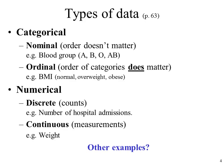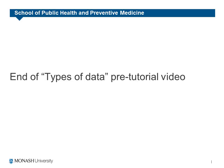Hopefully after seeing the data dictionary slide, the types of data and the distinction between nominal and ordinal categorical data makes more sense. Now have a think of other examples — other variables that you can put into categorical and numerical data — so you can have a discussion at the beginning of your tutorial. This is the end of the types of data pre-tutorial video. See you in class.